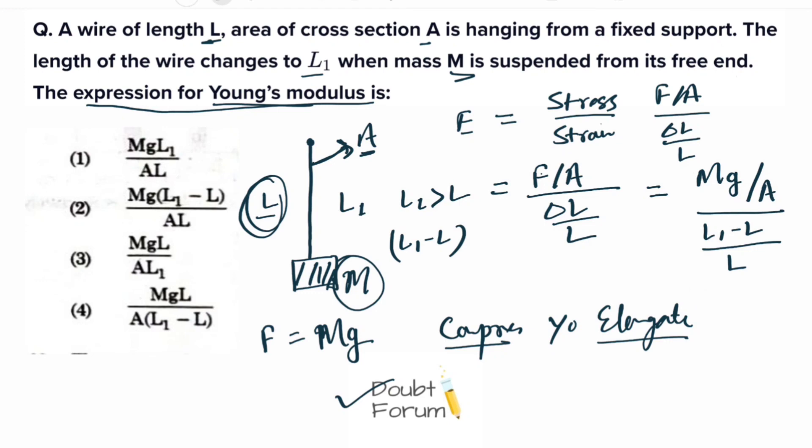So after solving this, we will get Mg times L, this L will go up, and below A times (L₁ minus L). So this will be the expression for Young's modulus. And option 4 is matching with our expression. So option 4 is the right one.